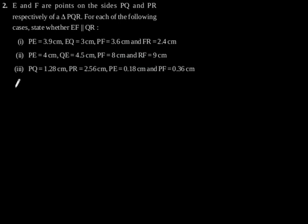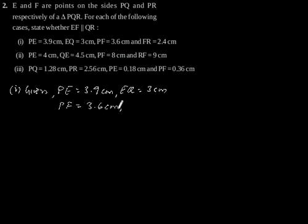So first, given PE is equal to 3.9 cm, EQ is equal to 3 cm, PF is equal to 3.6 cm and FR is equal to 2.4 cm.